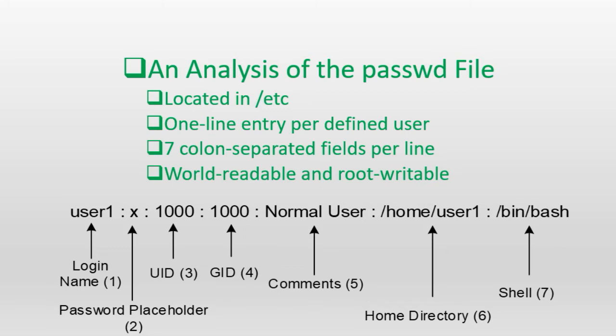Field number six defines the absolute path to the user's home directory, where the user lands after logging into the system. This directory is meant for storing the user's personal files. The default location for user home directories is /home. Field number seven is the last field and defines the absolute path to the shell file the user would use as their primary shell after logging in. The default shell assigned to root and normal users is the bash shell, which is also assigned automatically if this field is left empty.